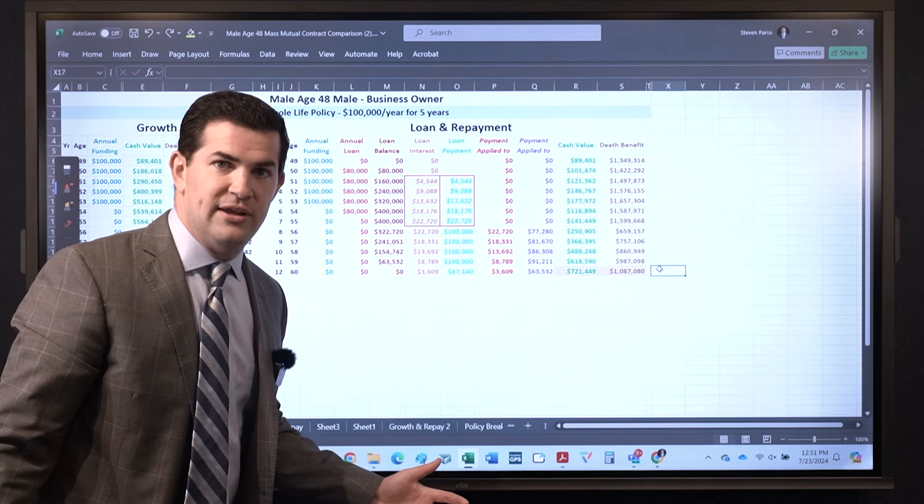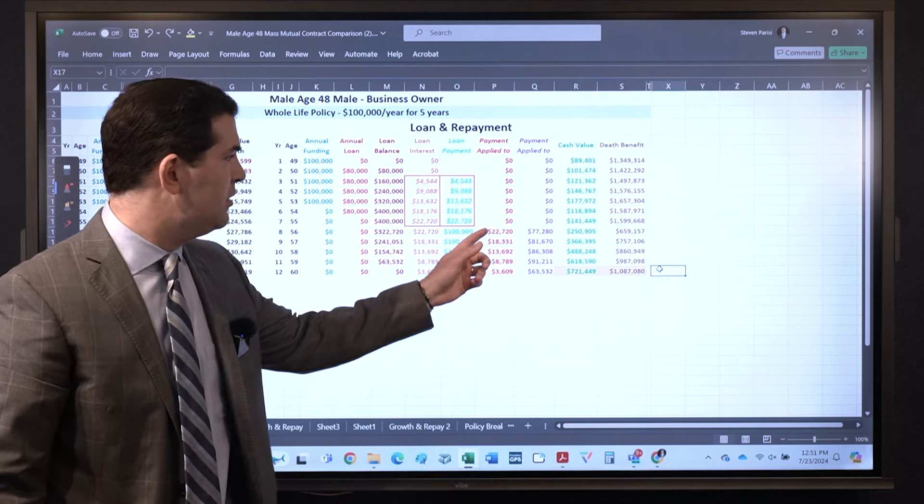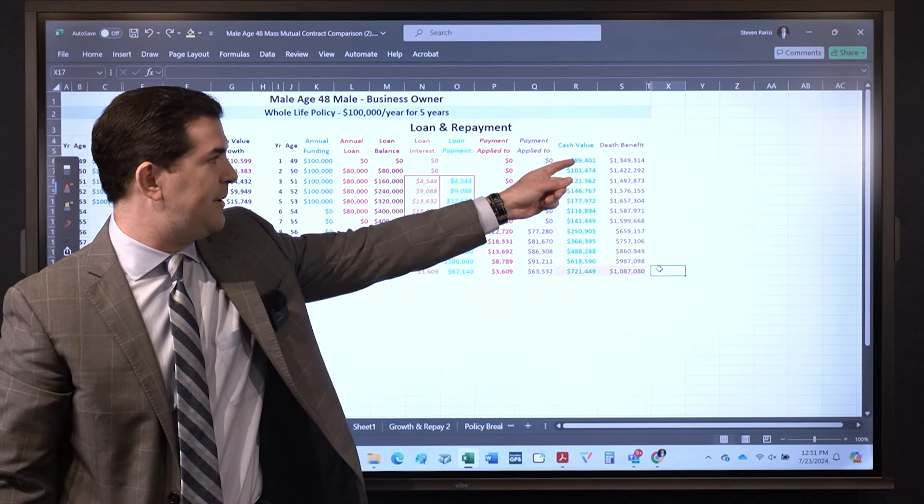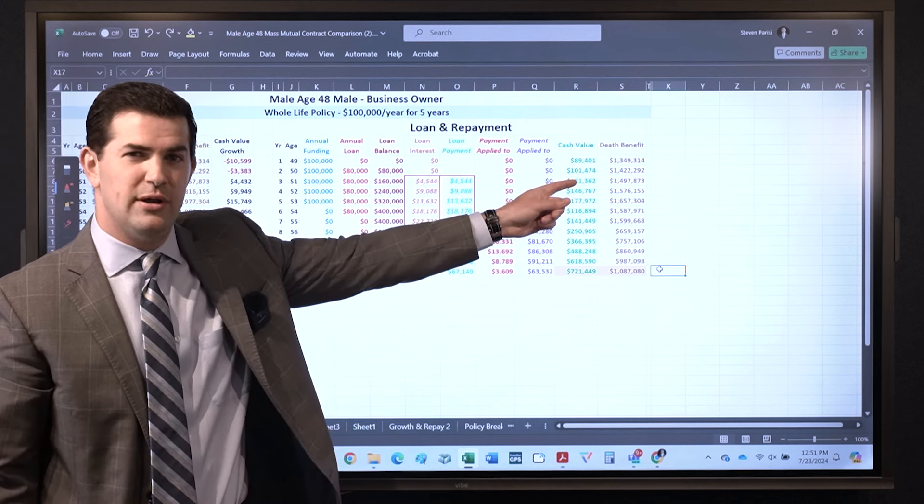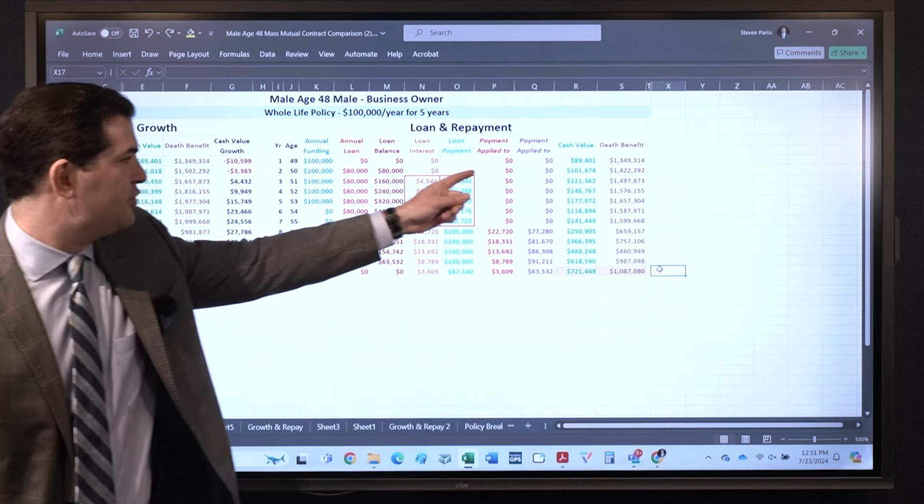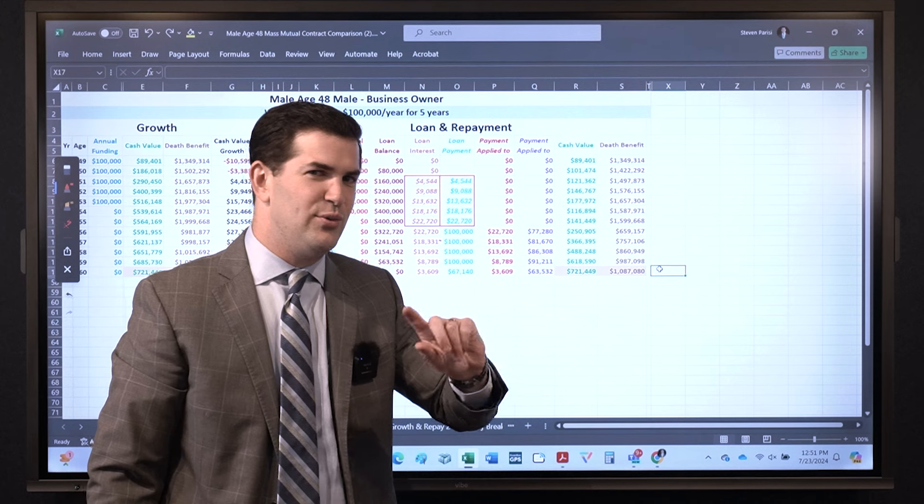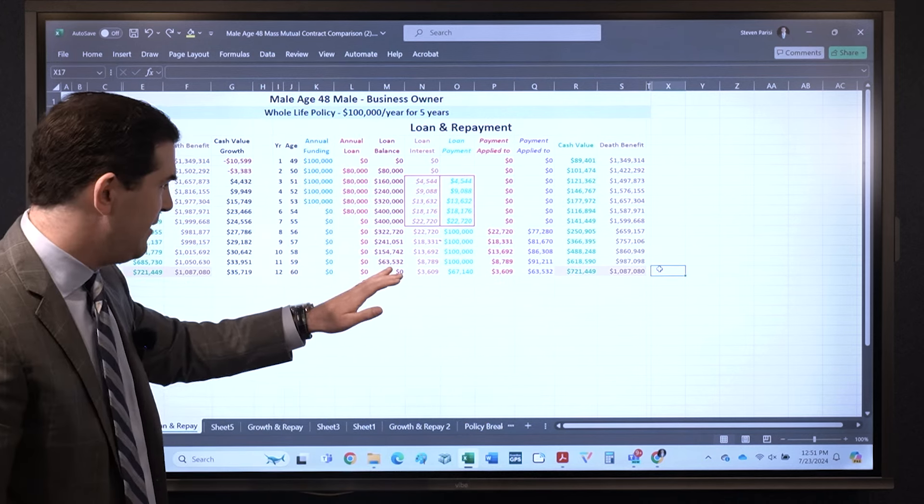So drawbacks to this are what? Upfront hit on cash value - paying $100,000, can only access about 85%, a little bit more in terms of a max. Then also the loan interest. But is it? Depends, we're going to look at the numbers when we hit on the end game piece.